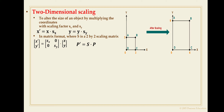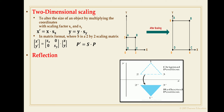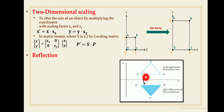The next transformation is reflection. Reflection is the transformation that produces a mirror image of a graphic element or object. As shown in the figure, this is the original position of a triangle and this is the reflected position. Reflection is the transformation that produces a mirror image of an object about an axis.